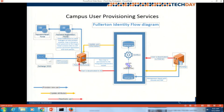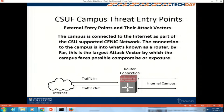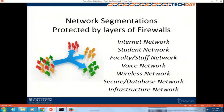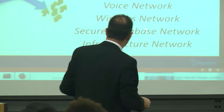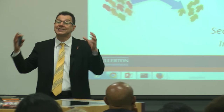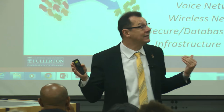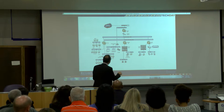How do we protect you against attacks? When you come to the campus from the internet, we have a router connection and then we do multiple things: we have firewalls, routers, intrusion protection devices, and protocol monitors. We use the concept of segmentation — the student traffic is different than the faculty traffic and staff traffic. The database network is different, and each of these segments is protected individually and differently. We actually spend a lot of time, effort, and cost to segment our network to protect us.